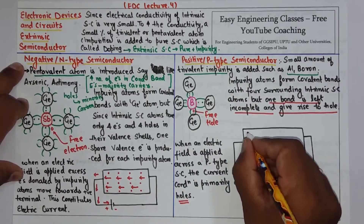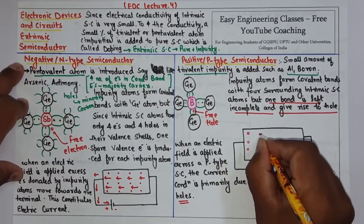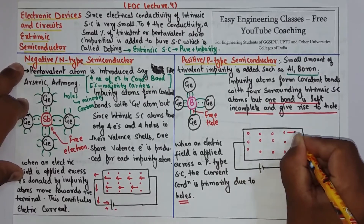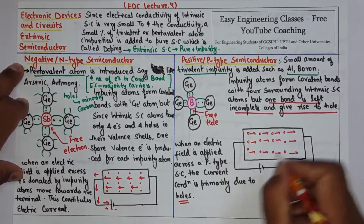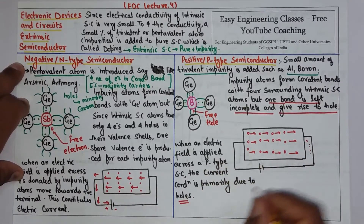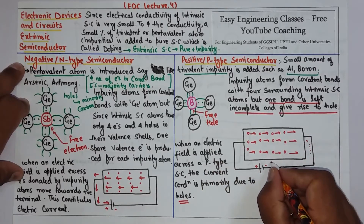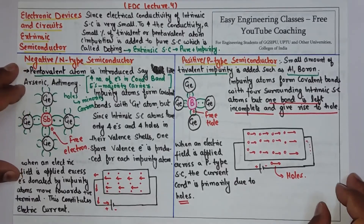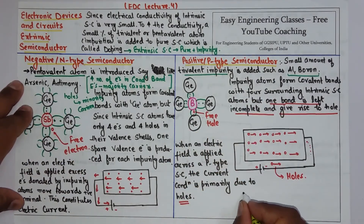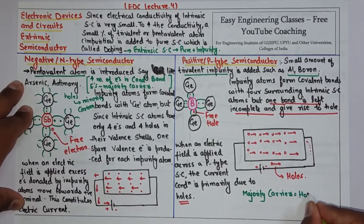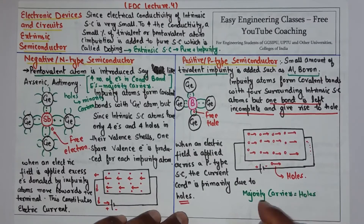The holes move towards the negative terminal of the battery, generating current. Simply put, in n-type you get extra electrons and in p-type you get extra holes. So if electrons are the majority carriers in n-type, then in p-type the majority carriers are holes, and the minority carriers in p-type are electrons.